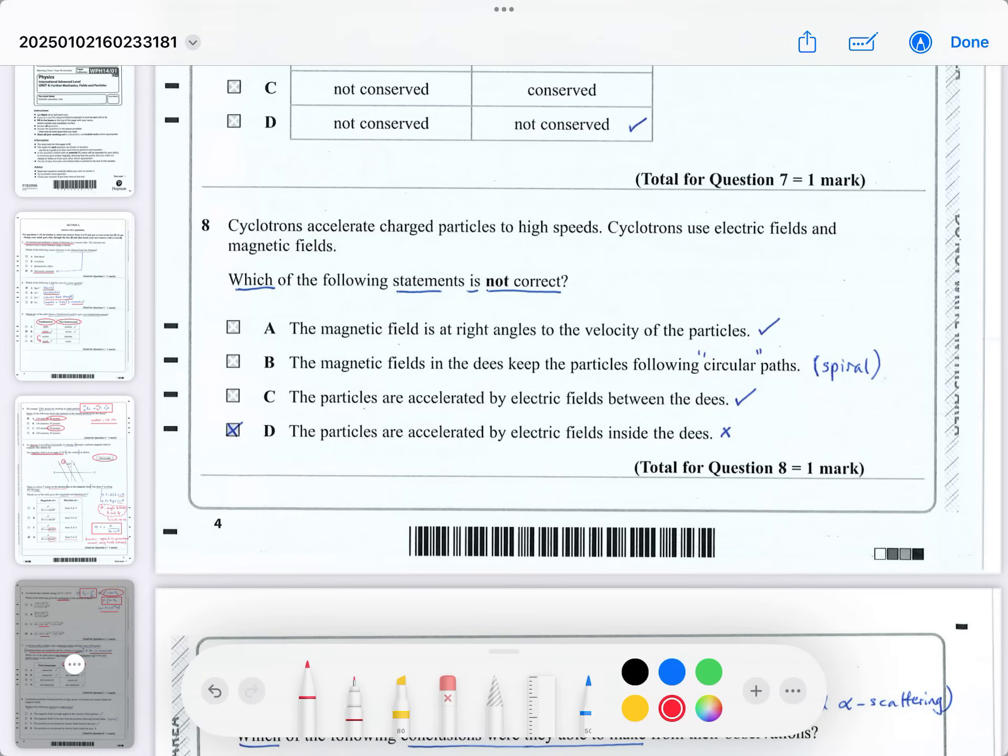Question 8 is about cyclotrons. Cyclotrons accelerate charged particles to high speeds. Cyclotrons use electric fields and magnetic fields, which statement is not correct? So whenever they put in the not, they put it in bold to make sure you've read the question carefully. The first one is correct, the magnetic field is at right angles of velocity of the particles. Now the particles actually spiral, because they kind of, as they go faster, they go into bigger and bigger circular paths. The magnetic fields in the Ds, there's two Ds in the cyclotrons, two halves to the circle, if you like, keeps the particles following circular paths. They're not perfect circular because, as I said to you, they're spirals, so leave that answer to the last, and you'll see that they mean spiral. The particles are accelerated by electric fields between the Ds. That is correct. It's between the Ds where they accelerate in terms of their speed.